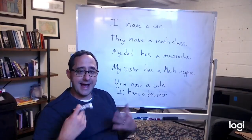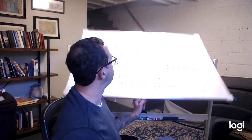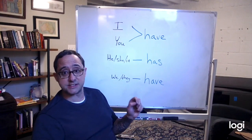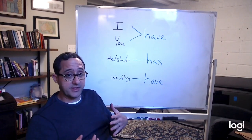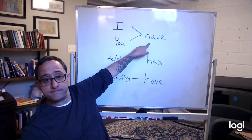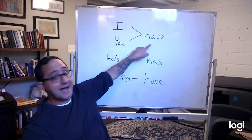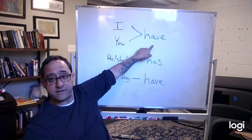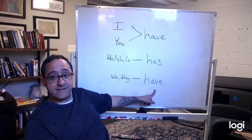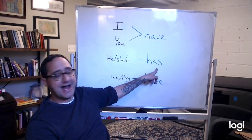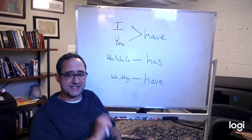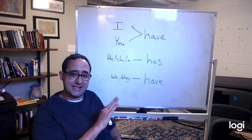Let's look at how we use it based on who the subject is. It's a little bit simpler than 'to be.' I have. You have. We or they have. He, she, or it has. So there's only one that is different — have and has.